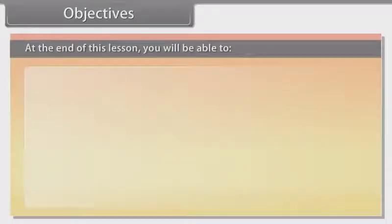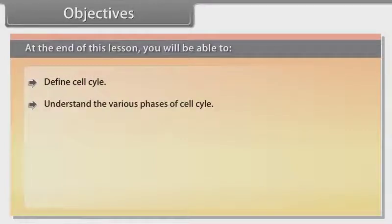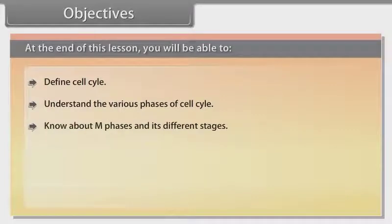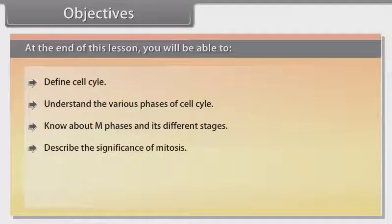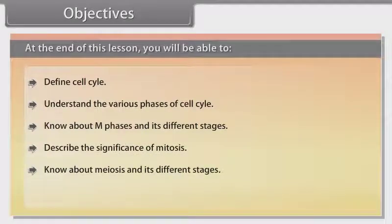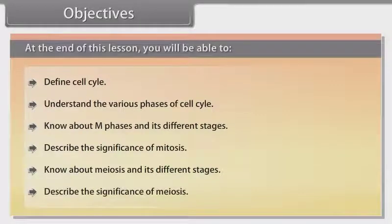At the end of this lesson you will be able to define cell cycle, understand the various phases of cell cycle, know about M phases and its different stages, describe the significance of mitosis, know about meiosis and its different stages, and describe the significance of meiosis.